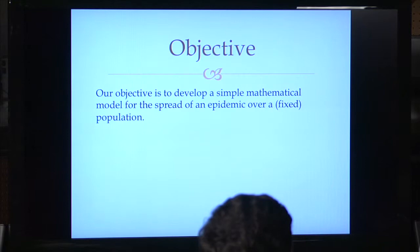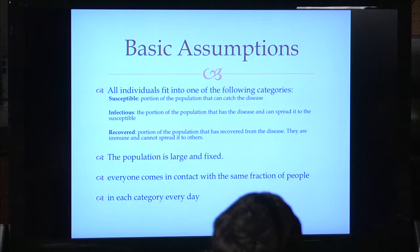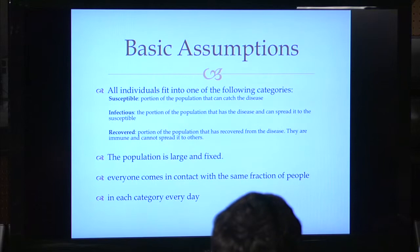Our model's objective is to develop a model to see the spread of disease in a fixed population — to see the course of a disease, how many people are infected, how many will get cured, and how many are already immune. We divide the fixed population into three categories: Susceptible (healthy people who can catch the disease), Infectious (already infected and can spread it), and Recovered (recovered and now immune).